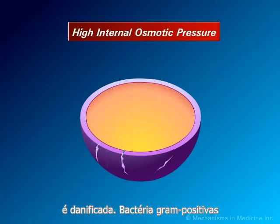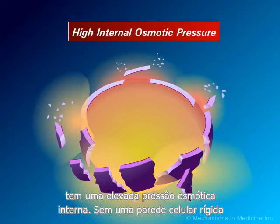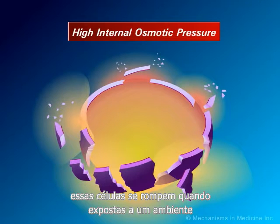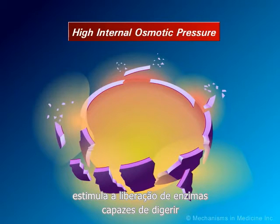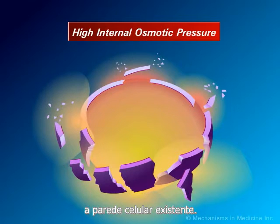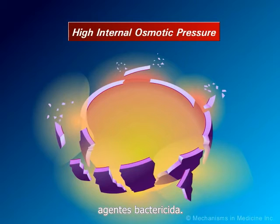Gram-positive bacteria have a high internal osmotic pressure. Without a normal rigid cell wall, these cells burst when subjected to the low osmotic pressure of their surrounding environment. As well, the antibiotic penicillin binding protein complex stimulates the release of autolysins that are capable of digesting the existing cell wall. Beta-lactam antibiotics are therefore considered bactericidal agents.